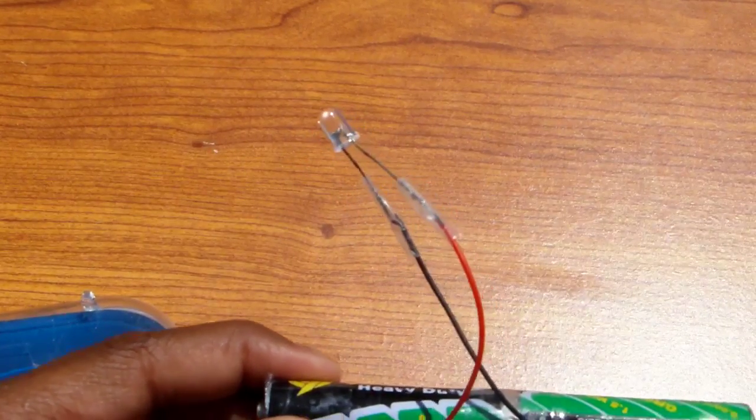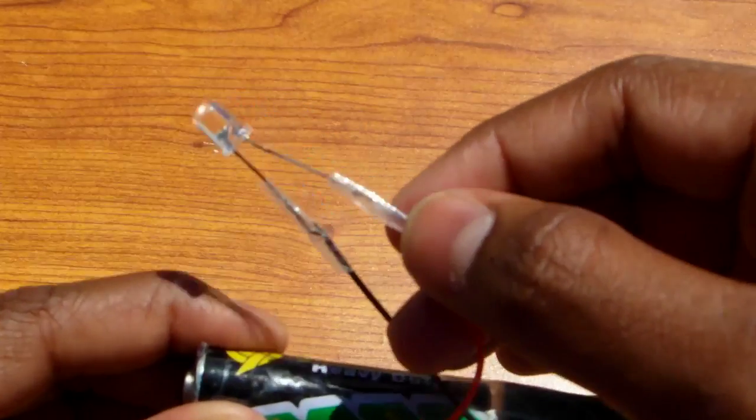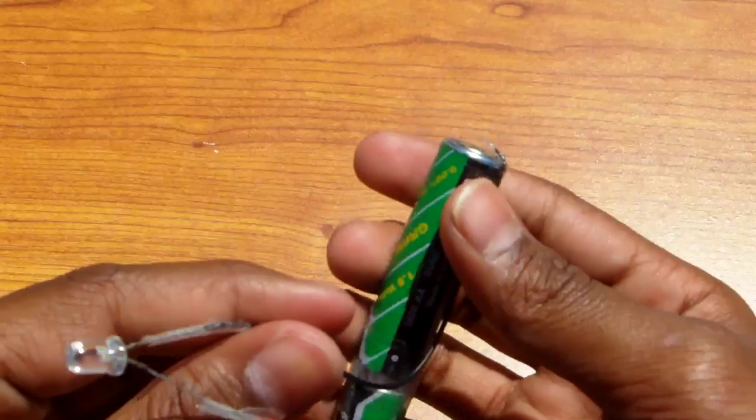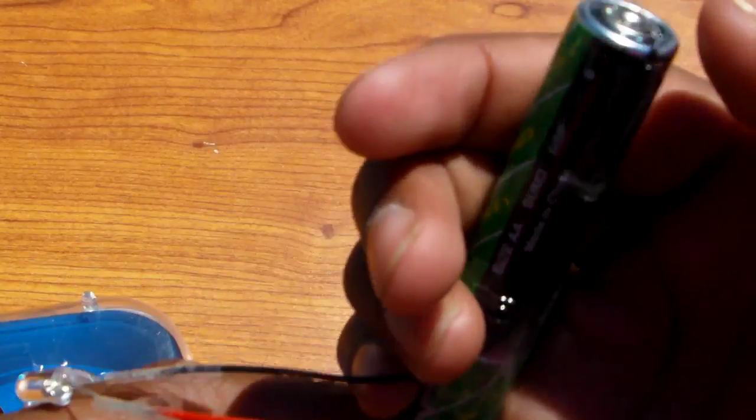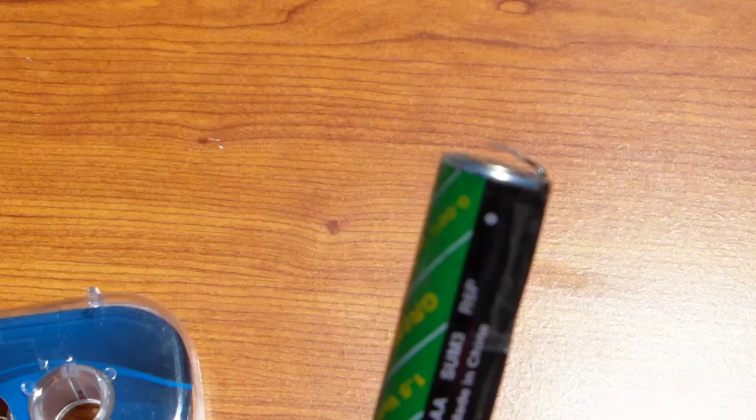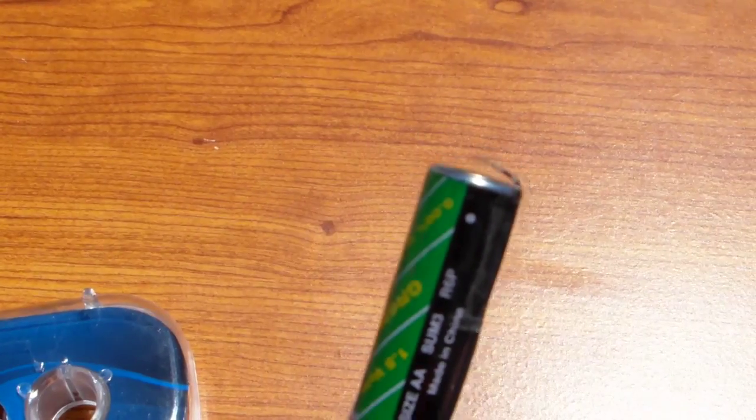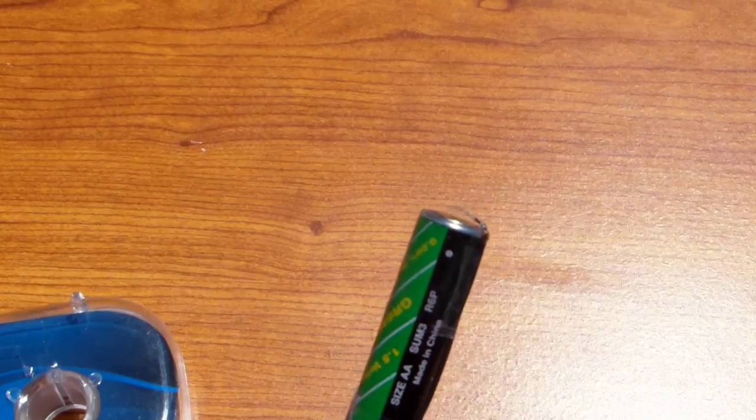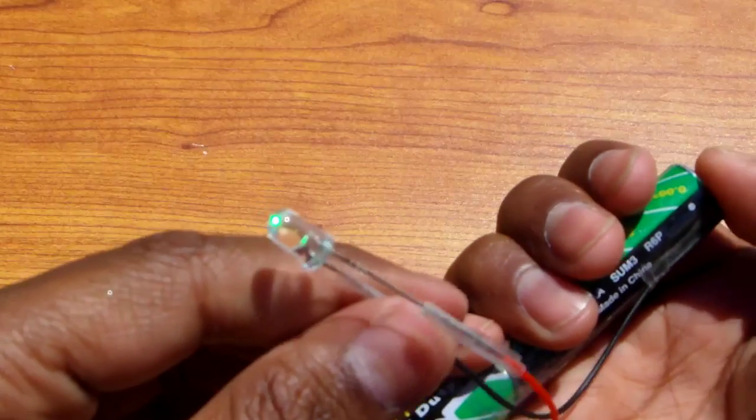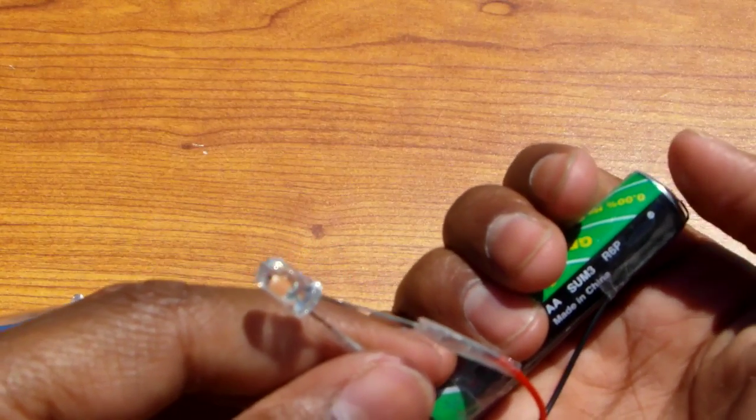I just taped everything together and just to make sure, I taped the wire to the LED light so it doesn't fall off. So now when you press this black wire right here and touch it, the LED light will turn on.